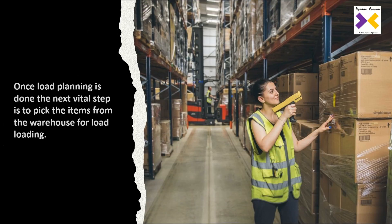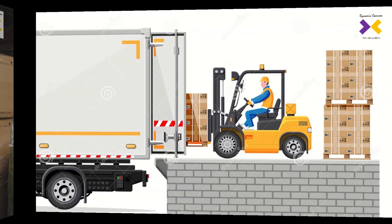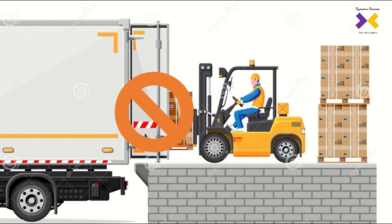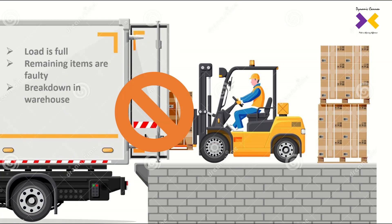Once load planning is done, the next vital step is to pick the items from the warehouse for load loading. There are many business reasons for which a load cannot be fully loaded. The load is already full and there is no space for the remaining quantity, the remaining items to be loaded are found to be of poor quality, or there is any kind of breakdown in the warehouse or any other business reason.